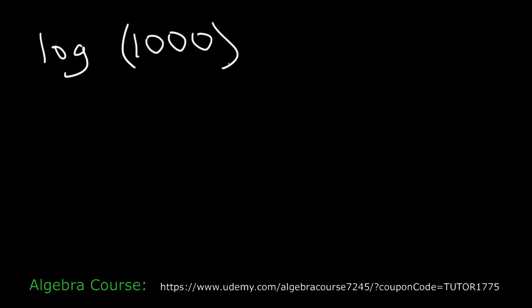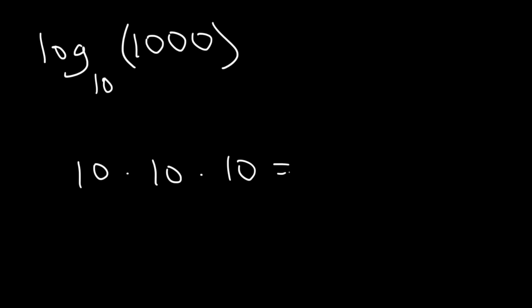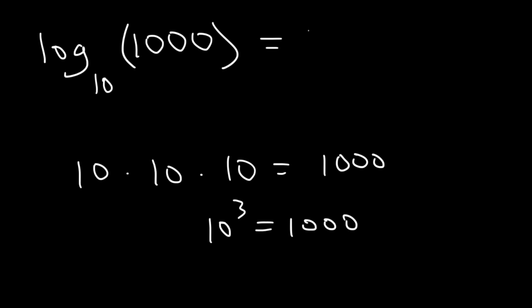Now what is log of 1,000? What should you do if you're not given a base? If there is no base, it's always assumed to be 10. So how many 10's do you have to multiply together to get to 1,000? You need to multiply 10 three times — this gives you 3 zeros and equals 1,000. So 10 to the 3rd is 1,000, therefore log base 10 of 1,000 is 3.